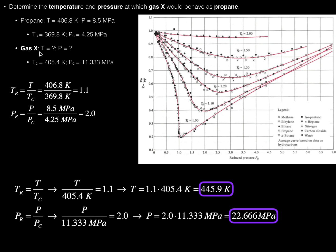For gas X, we don't know the temperature and pressure — we're trying to find the temperature and pressure at which gas X would behave as propane would. But we do know the critical temperature and pressure of this particular gas. Gas X has a critical temperature of 405.4 Kelvin and a critical pressure of 11.333 megapascals. In order for gas X to behave as propane would, according to the principle of corresponding states, gas X would also have to have a reduced temperature of 1.1 and a reduced pressure of 2.0.